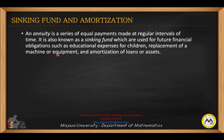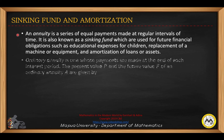An annuity is a series of equal payments made at regular intervals of time. It is also known as a sinking fund, which is used for future financial obligations such as educational expenses for children, replacement of a machine or equipment, and amortization of loans or assets.